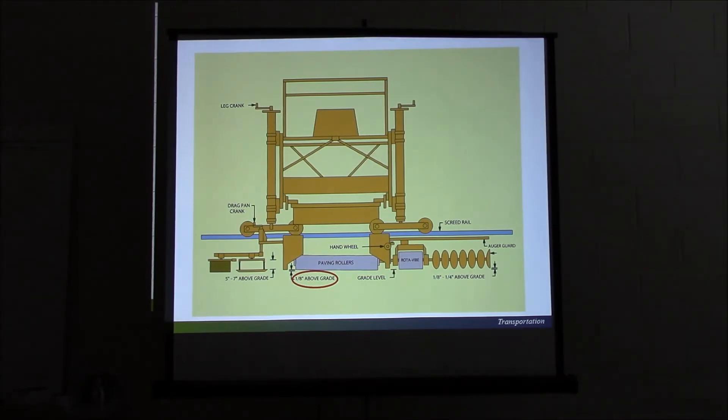So bear that in mind if a contractor starts making adjustments to the legs. The two most common adjustments that you will see them make are raising their augers and raising their back legs. If you raise your augers and the back legs, you're actually doing double-digging.